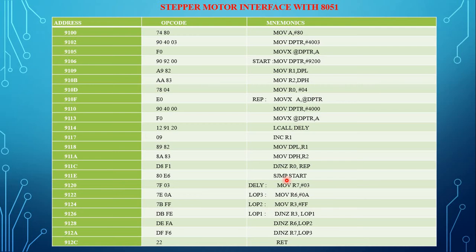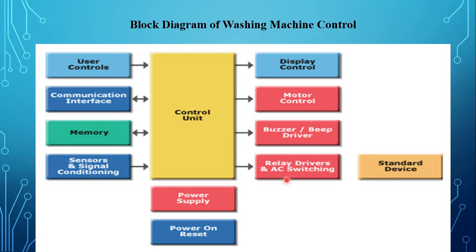This is the last topic: block diagram of washing machine control. A washing machine is an electronic device designed to wash laundry like cloth, sheets, towels, and other beddings. It is made up of two steel tubes — the inner tube and outer tube — whose main role is to prevent water spilling to other parts of the machine. The block diagram shows the microcontroller unit with power supply, power-on reset, user controls, communication circuit, memory, sensor and signal conditioning circuit, display unit, motor control, buffer/driver circuit, relay drivers, and AC switching.